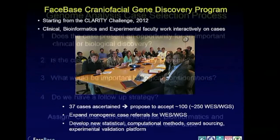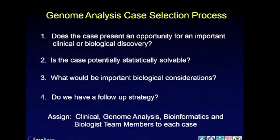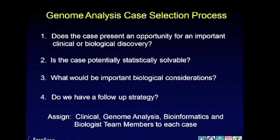We're going to expand case referrals and develop statistical and computational approaches as we go. We don't take every case that comes along — we want cases where we have a chance to learn something and cases we think we can actually solve. In the dominant case, if you have only a limited number of family members you can't solve it — too many variants. We always try to get the number of variants under consideration to fewer than 10 to have any realistic chance of resolving to a single variant, and we need important biological considerations and a follow-up strategy.